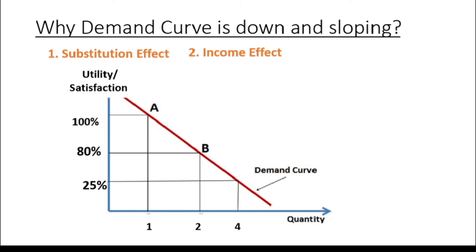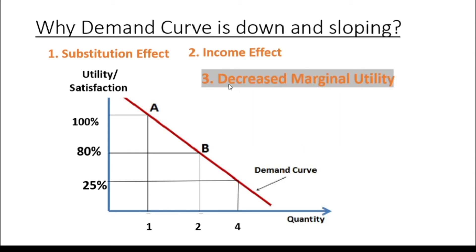The third reason, according to economists, is the law of diminishing marginal utility. In economics, utility is the satisfaction, happiness, joy, or benefit derived from consuming a product. The marginal utility of a good or service is the change in utility from an increase in the consumption of that good or service. As the utility of a product decreases as its consumption increases, consumers are willing to pay smaller amounts for each additional quantity of the same product.